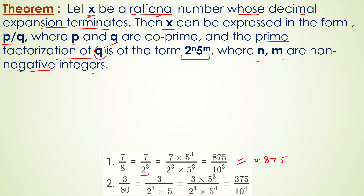Here we have 3 by 80, which means 3 upon 2 to the power 4 into 5 to the power 1. To convert the denominator to a power of 10, we multiply by 5 to the power 3 in both numerator and denominator, giving 375 upon 10 to the power 4. So the result is 0.0375, which is also terminating since the denominator has powers of 2 and 5 only.